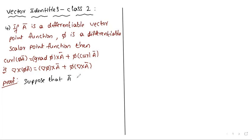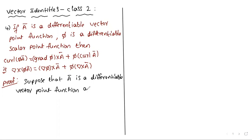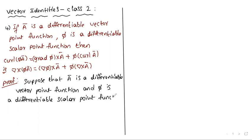Suppose that Ā is a differentiable vector point function and π is a differentiable scalar point function.